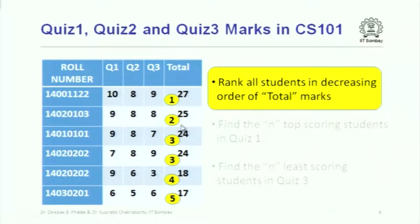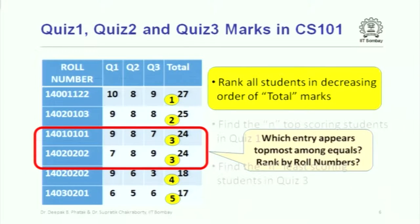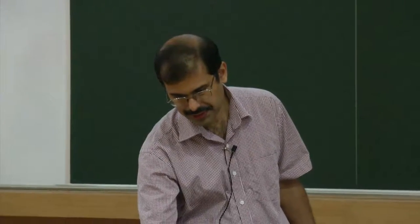Of course, if two students have the same total marks, the question of which one appears before the other remains. One can say any ordering between them is fine, or one could say put the one with the lesser roll number first. So we could come up with additional criteria to resolve such ties. This is fairly natural — we need to determine an order by which we put one before the other.